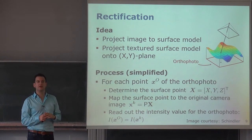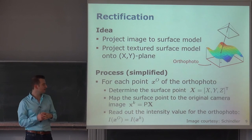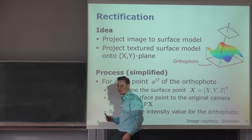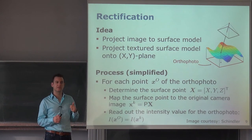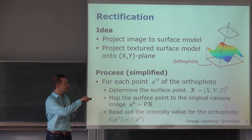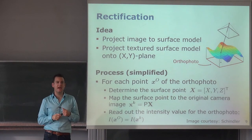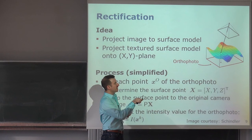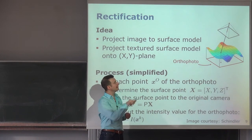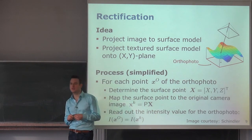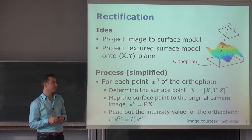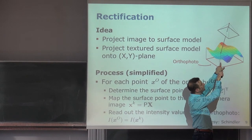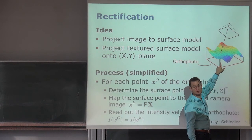In practice, we do it slightly differently. We iterate over all points of the orthophoto and estimate the height of the corresponding pixel — the XY location from the output grid, and the Z height from our 3D model. Then we check which point in the camera image this surface point projects to, and take the RGB value from the corresponding pixel in the input image.